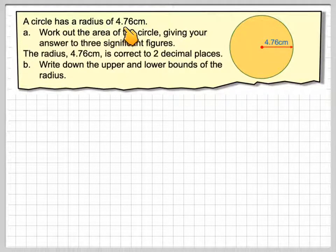A circle has a radius of 4.76 centimeters, so the radius is the distance from the center of the circle to the outside. It says work out the area of the circle, giving your answer to three significant figures.